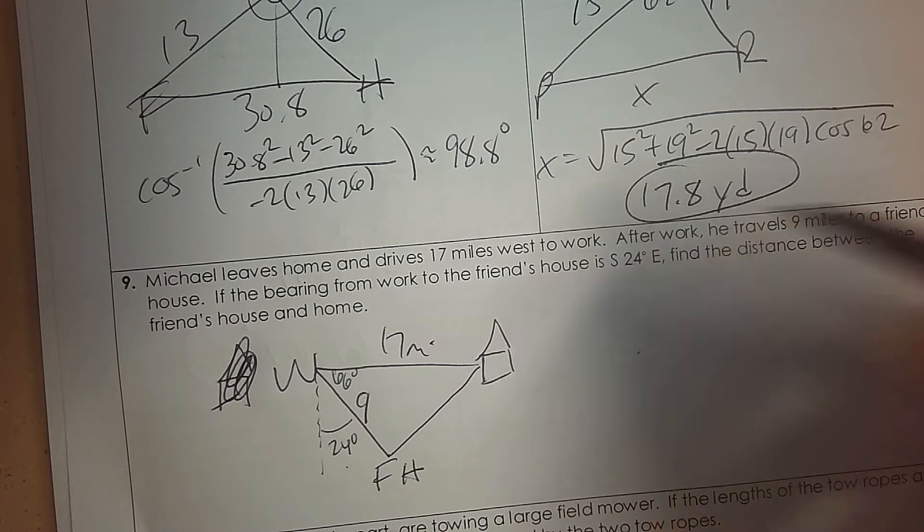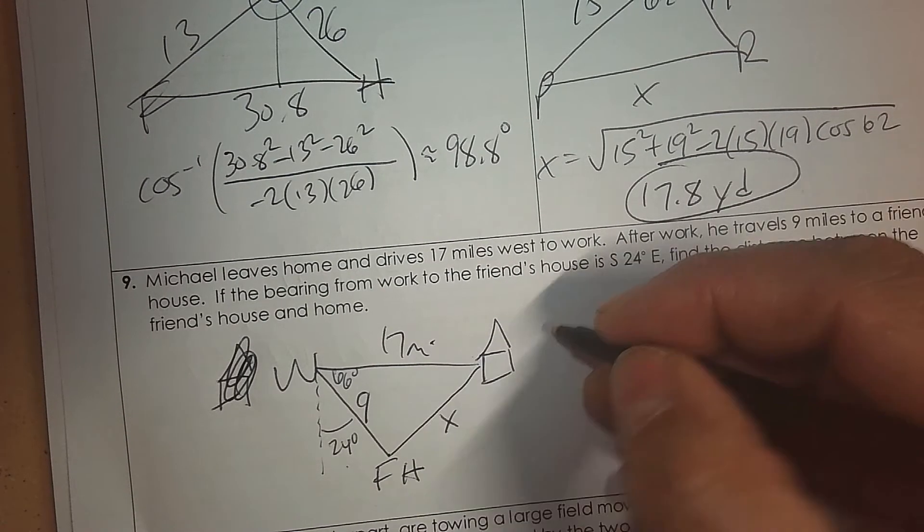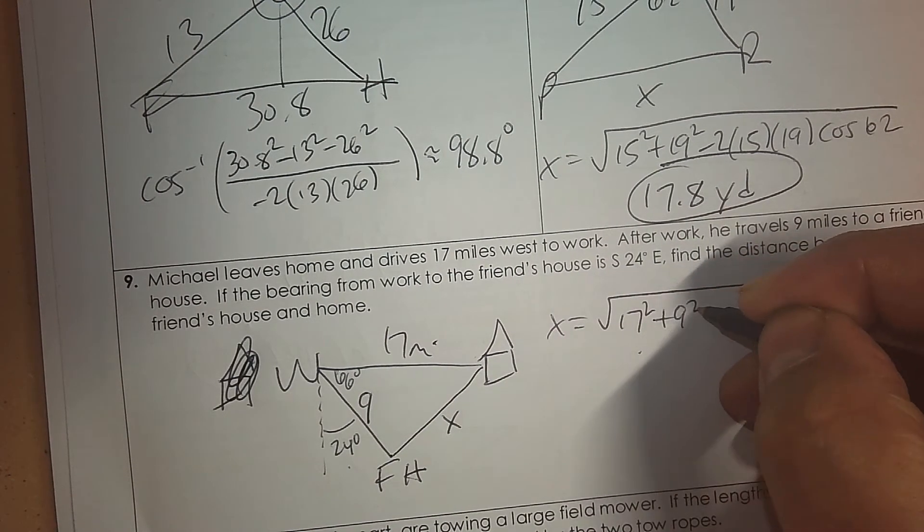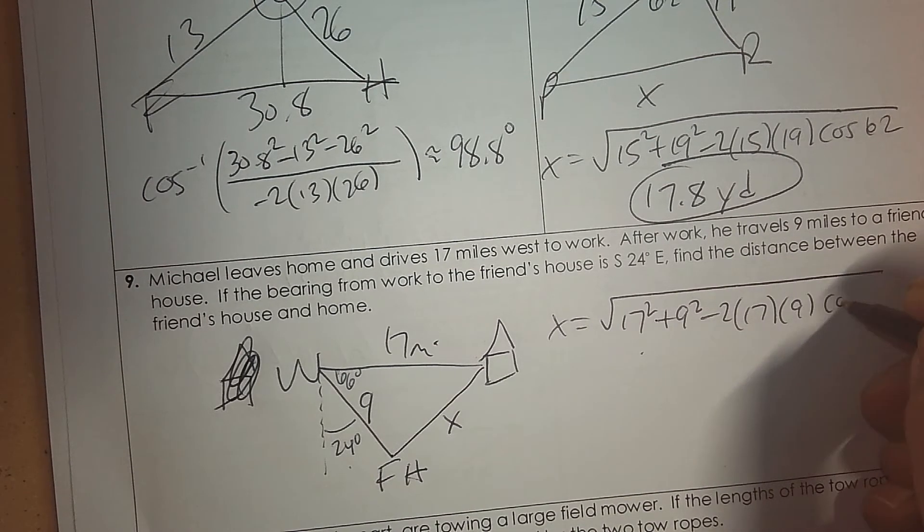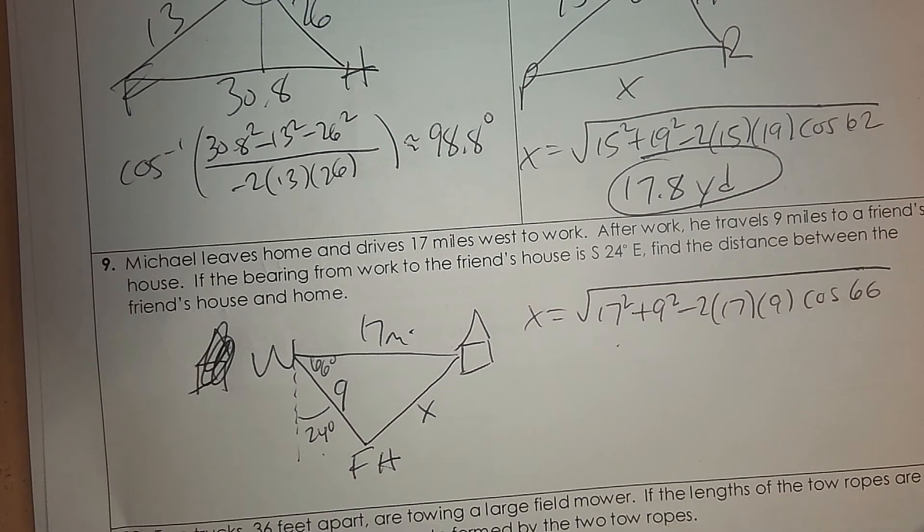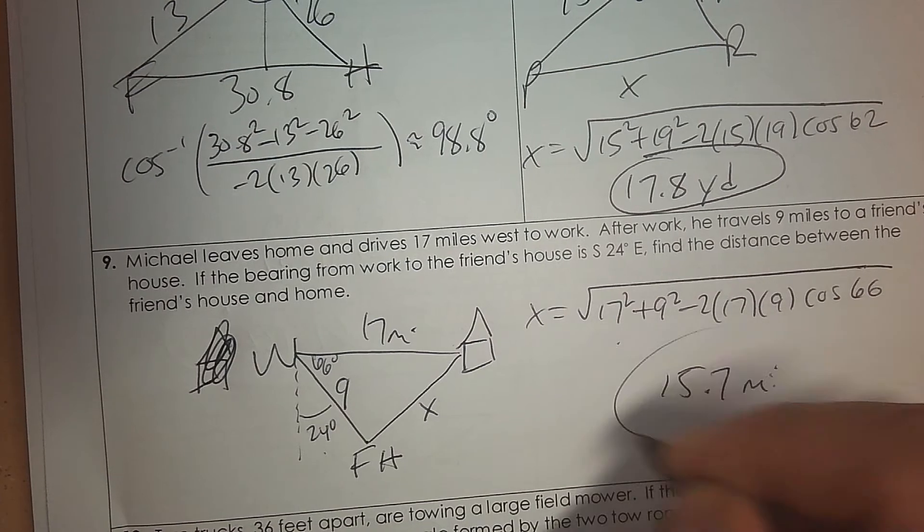And then if I want to find the distance between the friend's house and home, that's big square root sign. And it's 17 squared plus 9 squared. I'll subtract 2. 17 times 9. And then cosine of 66 degrees. And that's it. So press pause, type it in, and see if the answer is correct. 15.7 miles.